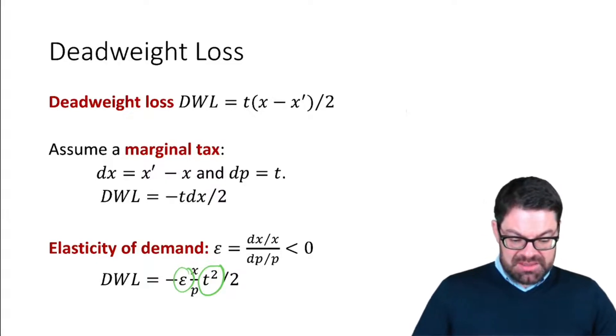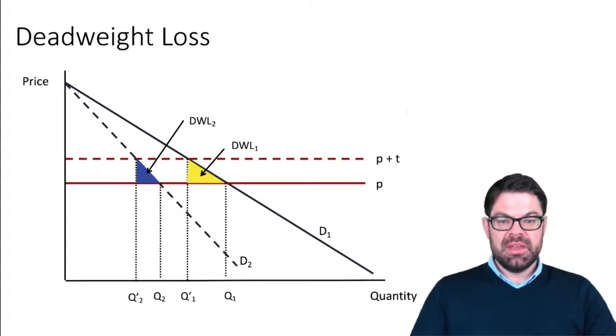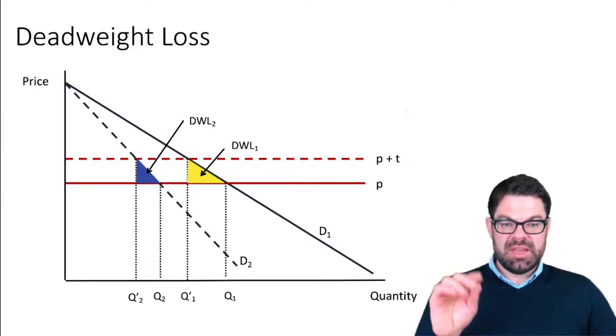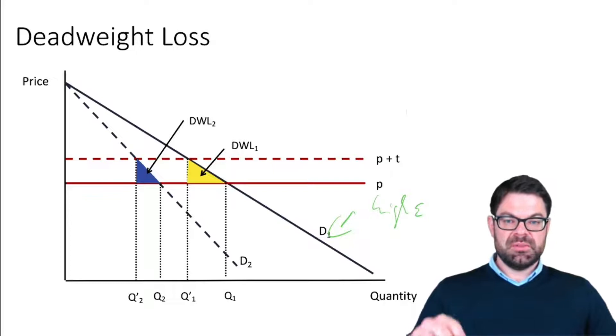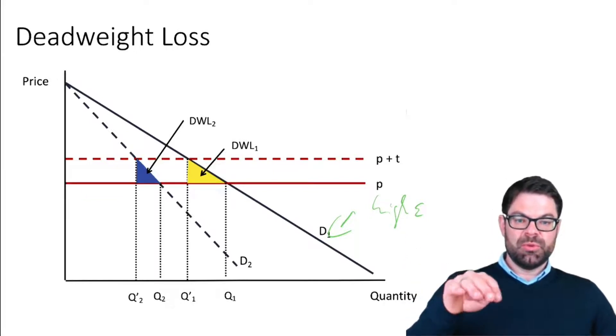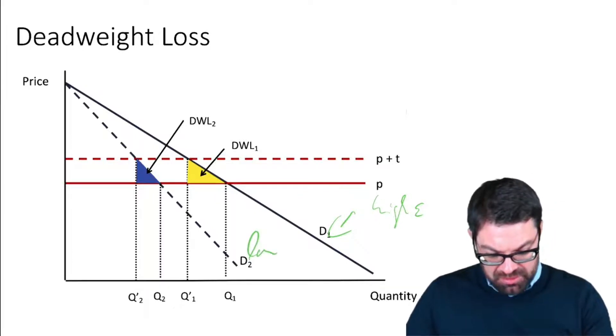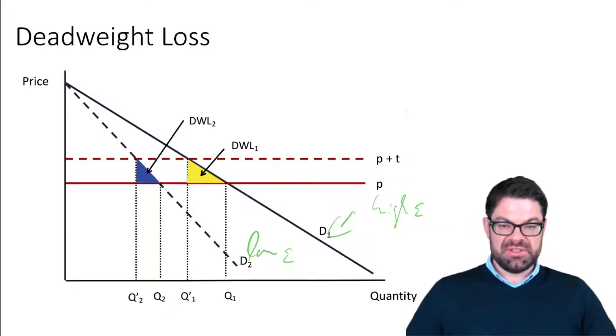We will look at this now in graphs to understand the intuition behind that. Here we see what I've drawn already in the previous video, how the deadweight loss depends on the demand elasticity. For demand curve one we have a high elasticity, so it's easy for consumers to move away. And here we have a low epsilon, a low elasticity, so we have a very steep demand curve.